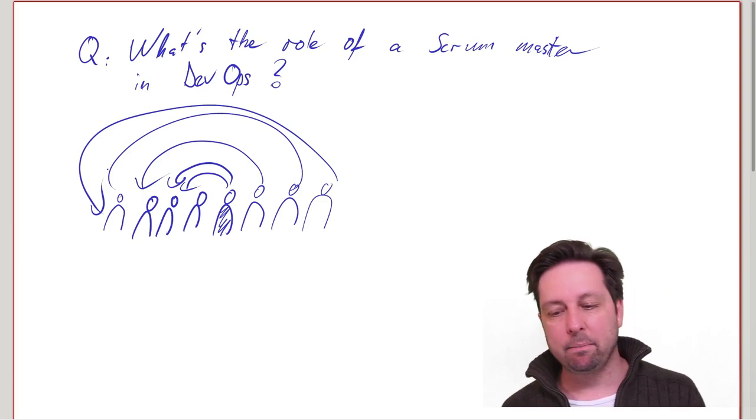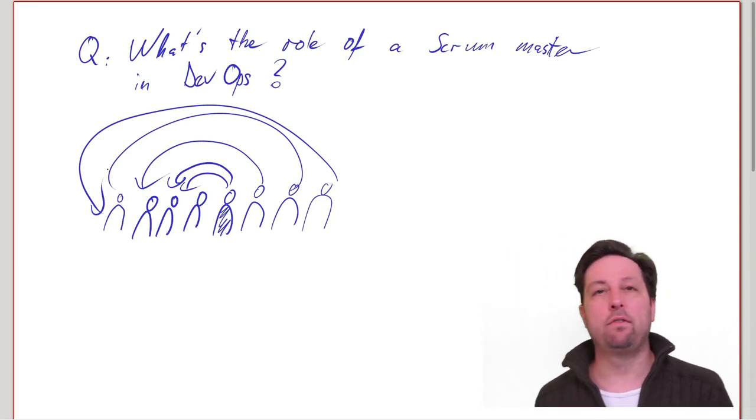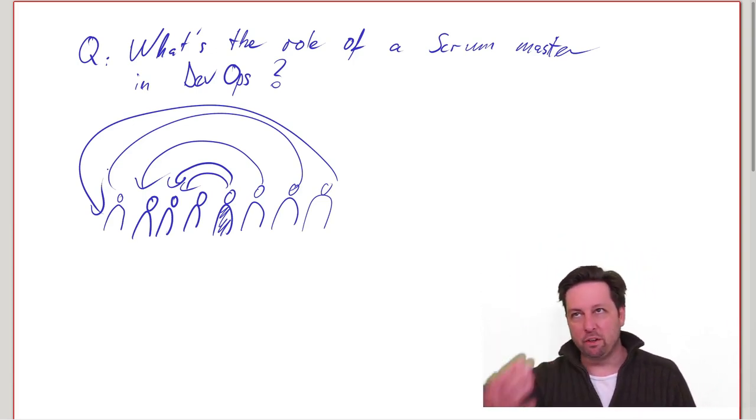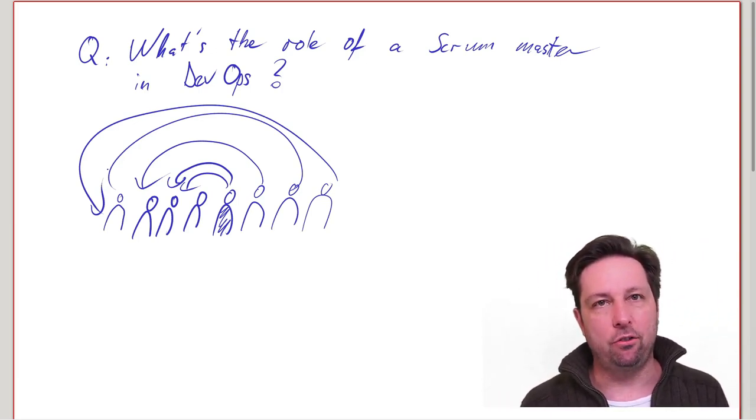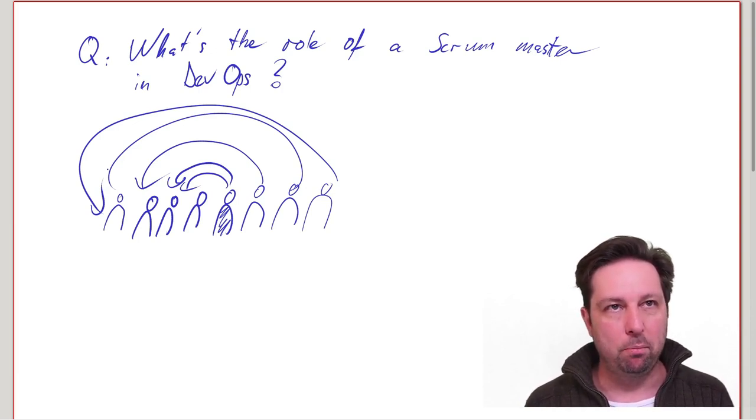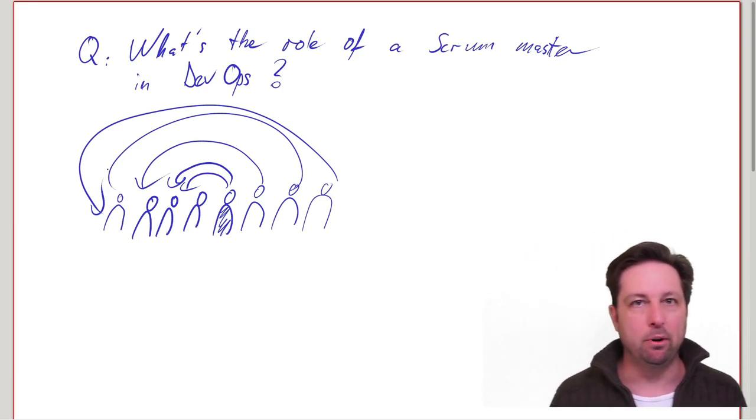And I think that is how the role of a Scrum Master changes as you're moving to a DevOps model. So the aspect of the role of being the guardians of the feedback loops becomes much more powerful and much more important.